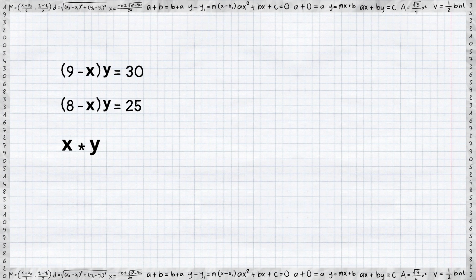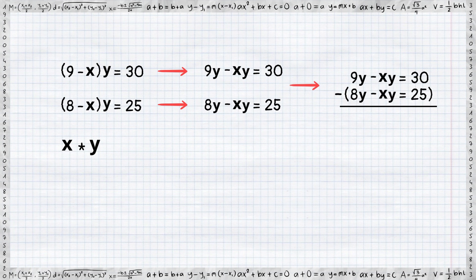Beginning with the first equation, we'll distribute y and then repeat the process for the second equation. Now, let's do a little math magic by subtracting the second equation from the first. The xy terms vanish and we are left with the simple truth that y equals 5.